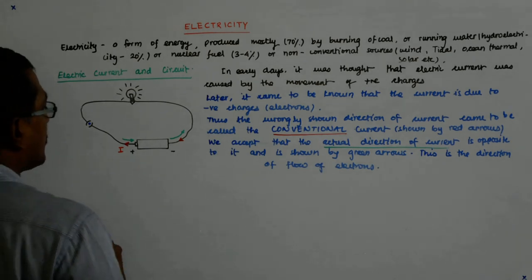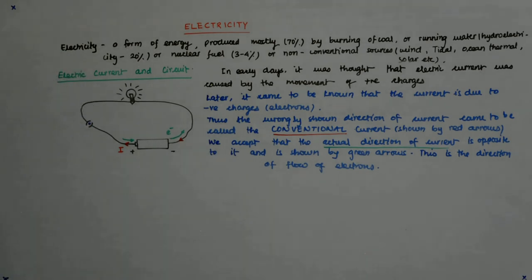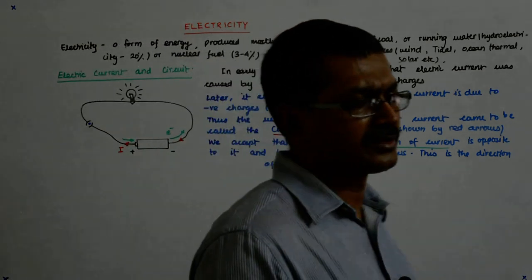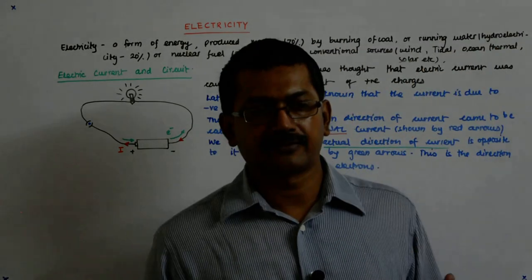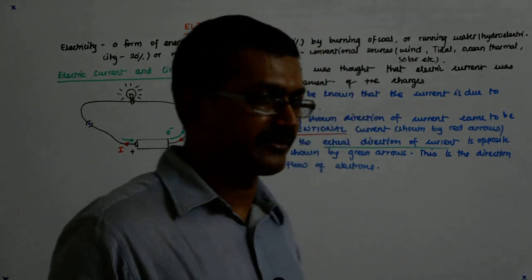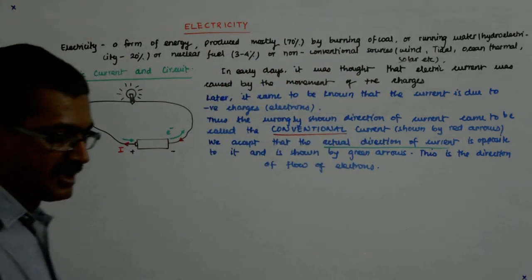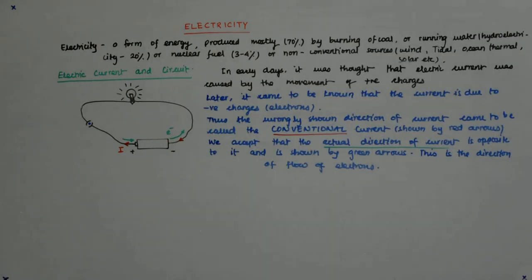However, the electrons will flow like that. Green is the direction of the flow of electrons. And this you'll carry for your life. This mistake, we'll keep on making, accepting that we are making a mistake. You understand? Fine.